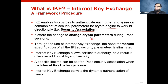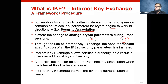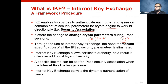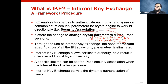IKE ensures that both parties agree on encryption algorithm — for example, AES — and hashing algorithm — for example, SHA-256. Parameters must match on both sides; otherwise, if one side encrypts with 3DES and the other decrypts with AES, the crypto engine cannot work bi-directionally. So IKE must authenticate both parties and bring them to agreement on security parameters.